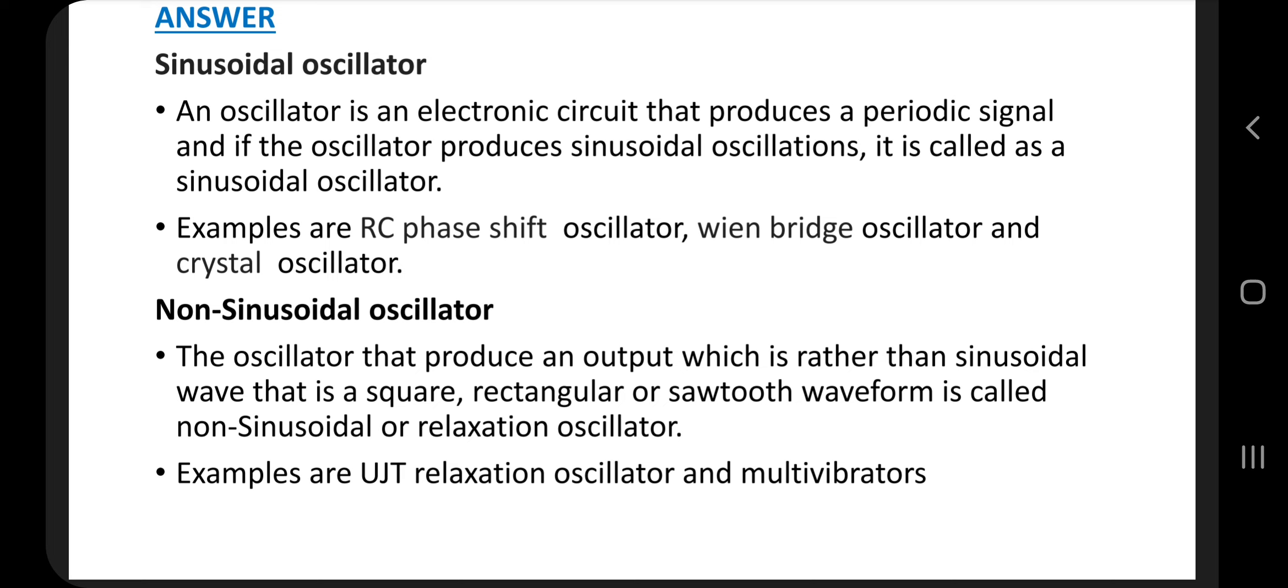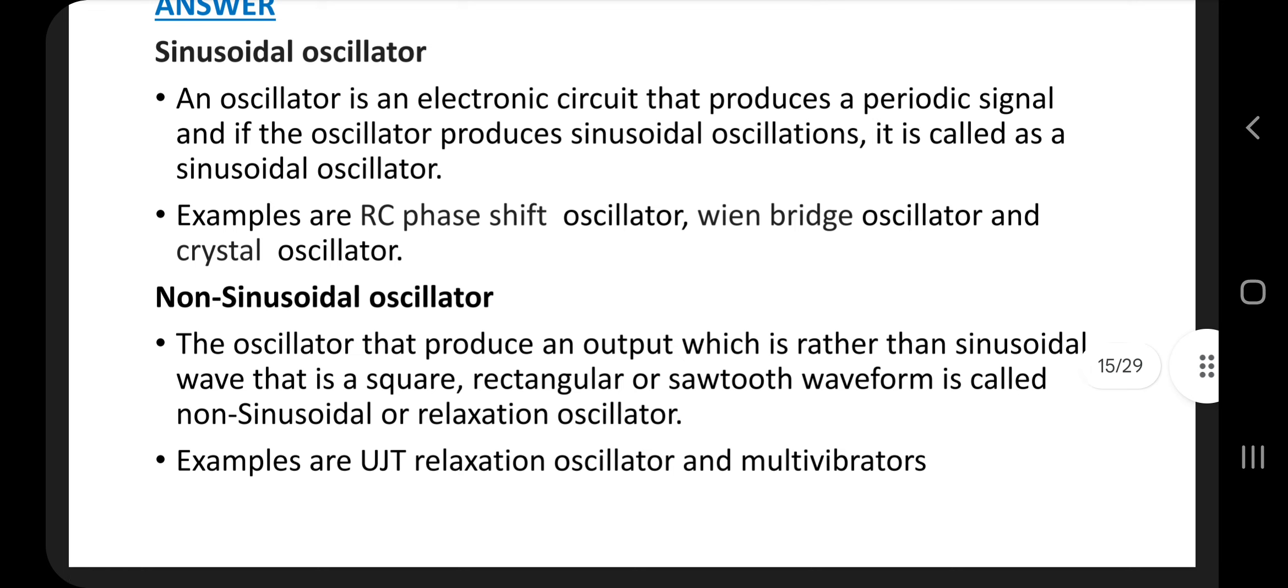Non-sinusoidal oscillator. The oscillator that produces an output which is rather than sinusoidal wave, that is a square, rectangular, or sawtooth waveform is called non-sinusoidal or relaxation oscillator. Examples are UJT relaxation oscillator and multi-vibrators.